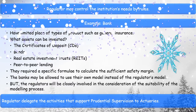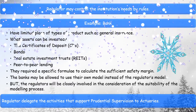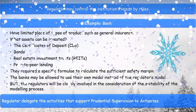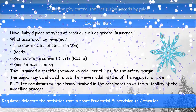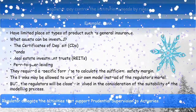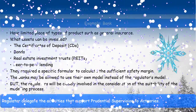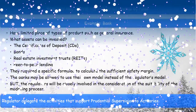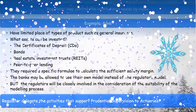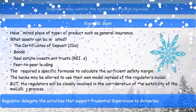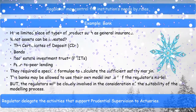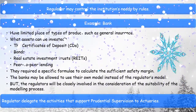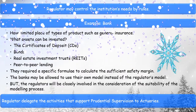What assets can be invested? Assets that can be invested include certificates of deposit, bonds, real estate investment trusts, and peer-to-peer lending. They are also required to use specific formulae to calculate a sufficient safety margin. On the other hand, banks may be allowed to use their own model instead of the regulator's model, but the regulators will be closely involved in the consideration of the suitability of the modeling process. Regulators delegate the activities that support prudential supervision to actuaries.